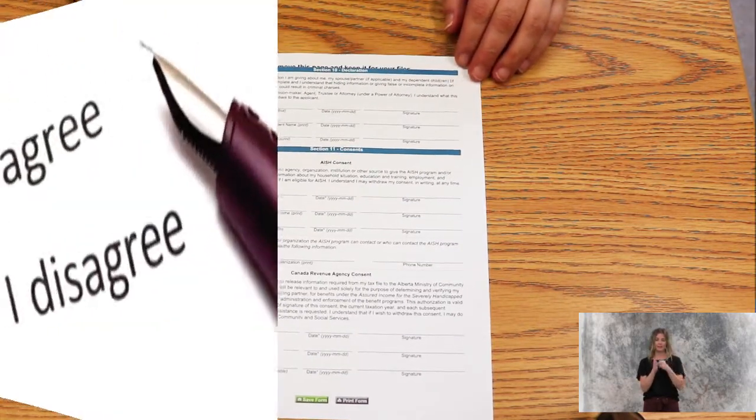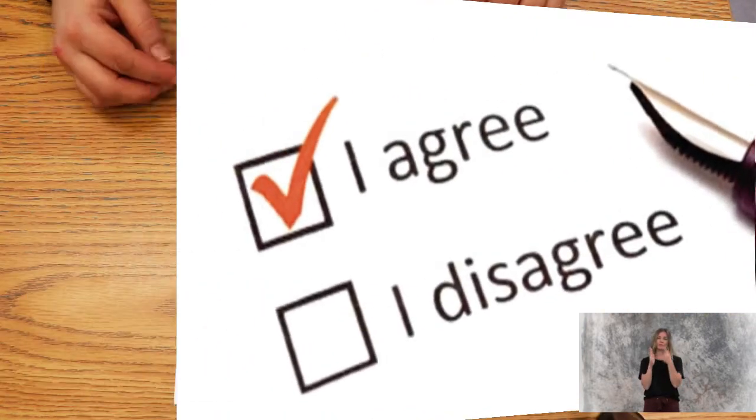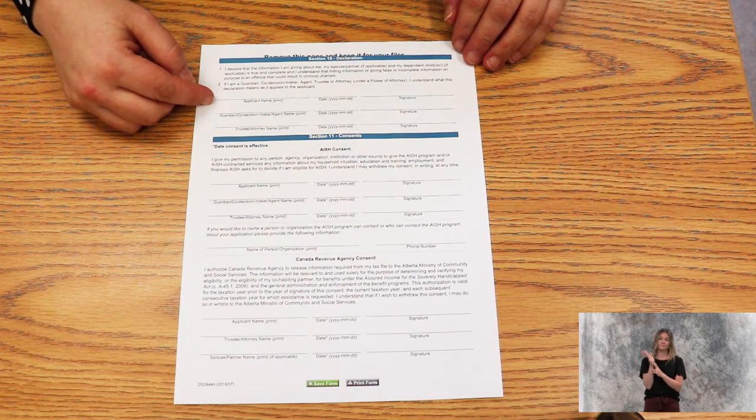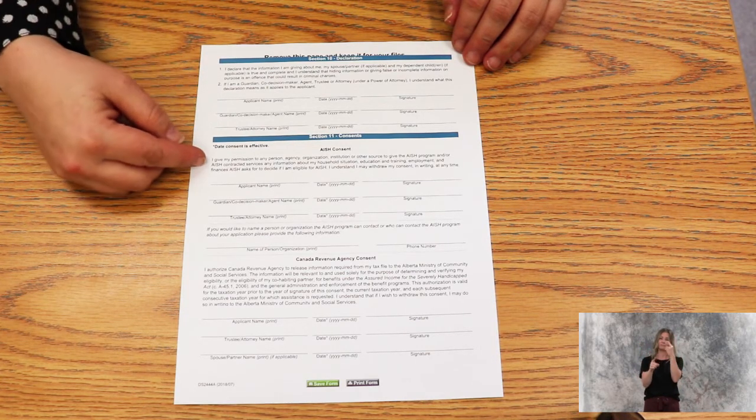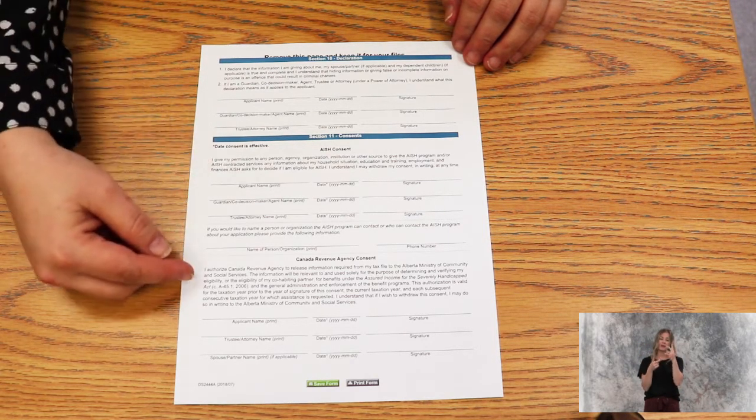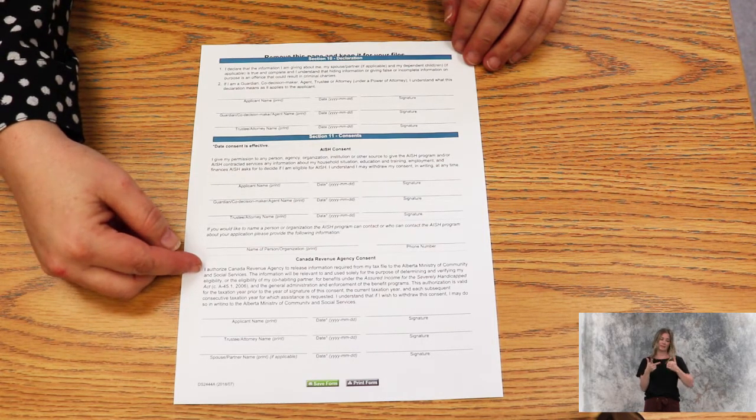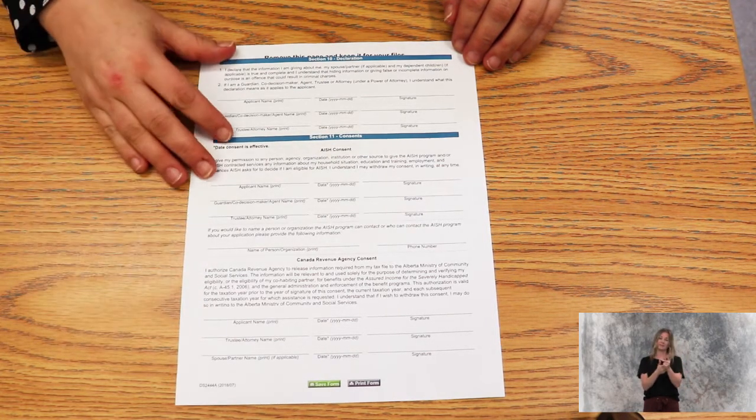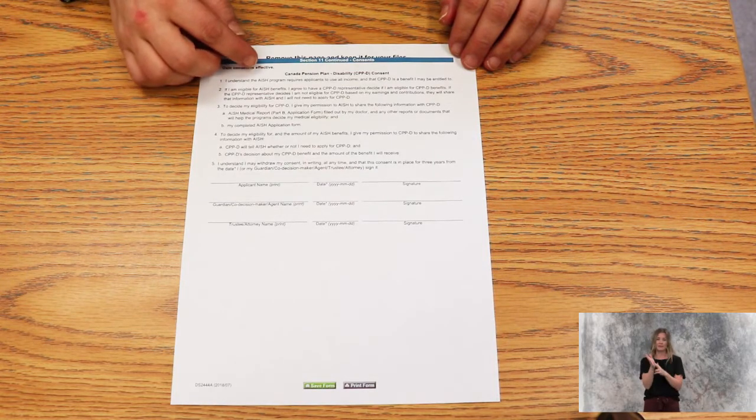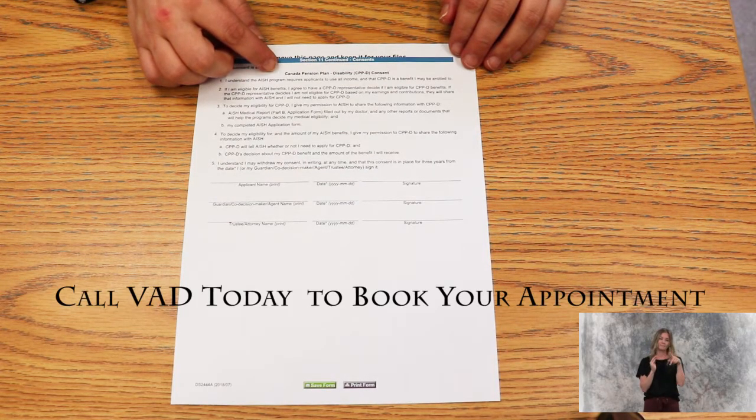The last page has three spots for signatures: the declaration that information is correct, the AISH consent, and the Canada Revenue Agency consent, where your partner and yourself will need to sign. Section 11 continues for the Canada Pension Plan Disability Consent.